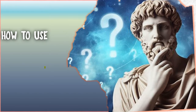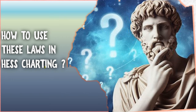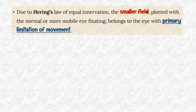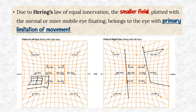Now let us discuss how to use these laws in Hess charting. Due to Herring's law of equal innervation, the smaller field seen in the Hess chart belongs to the eye with the primary limitation of movement. For example, if the smaller field belongs to the left eye field, it means that when charting with the right eye fixing, there is limitation, paresis, or palsy present in the left eye.